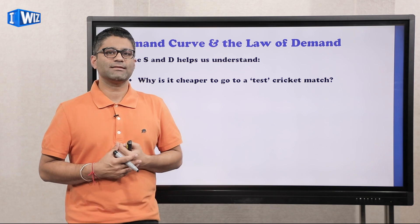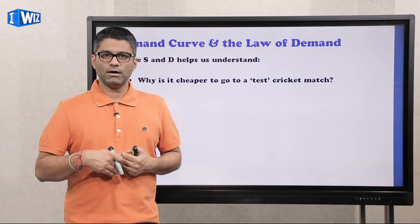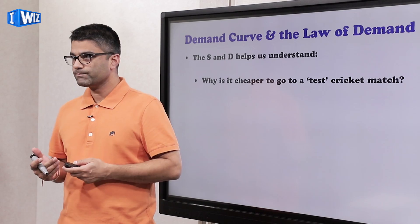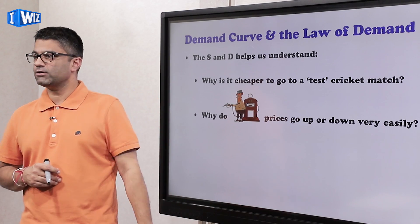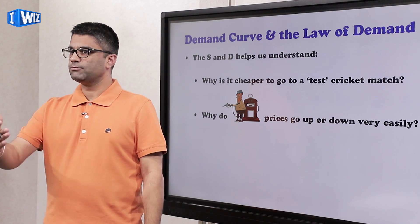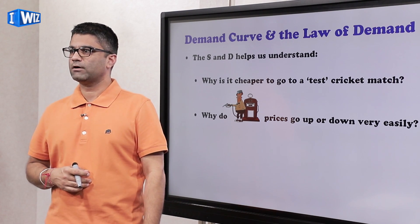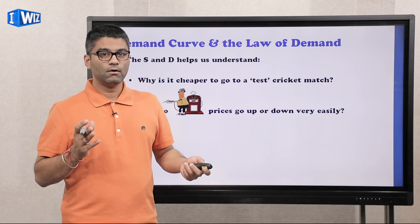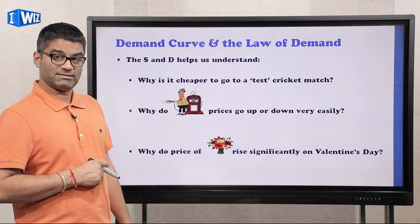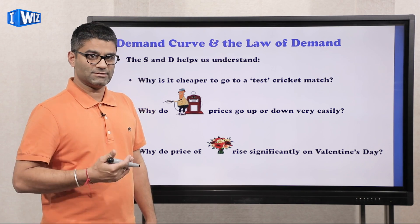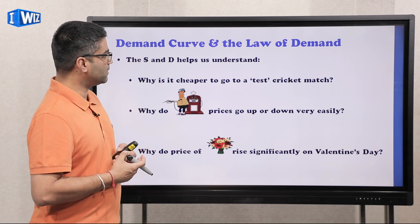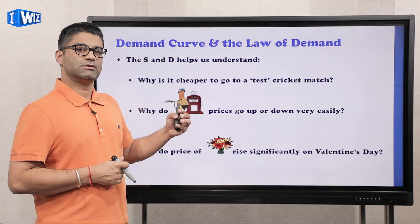For example, why is it that when you go watch a cricket match, the ticket for a test match is much cheaper than the ticket for a one-day match? Or why is it that when you go get gasoline filled in your car, the price fluctuates on an hour-to-hour basis — if you go get gas filled over a couple of days, the price will vary a lot. Or why is it that the price of roses rises significantly on Valentine's Day? These are questions you can answer with a simple understanding of demand and supply.